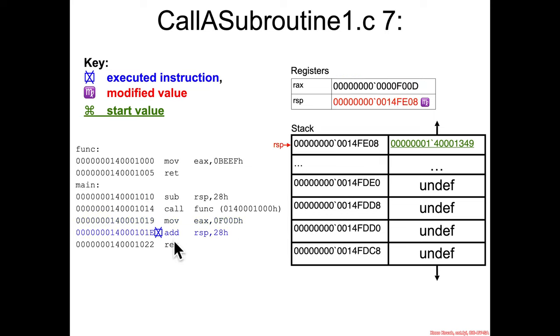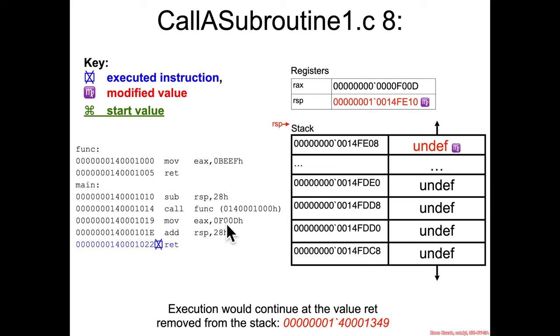And then add RSP plus 28. So we saw subtract here and then it's balancing it out. So rather than using a bunch of push, push, push, push, push, pop, pop, pop, pop, pop, it's just subtracting the stack pointer down and adding the stack pointer back up to balance it out. So that the next assembly instruction, RET, can pop the return address off the stack and go back to whichever function called main. And that value was 14001349. And again, automatically as part of that return is the increment of RSP plus eight.